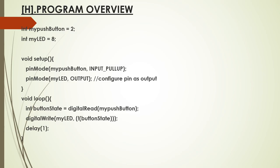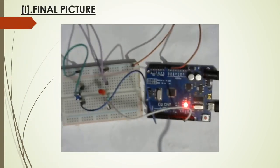If buttonState contains zero, the NOT operator reverses it to one — so one (high) is supplied to pin 8 and the LED turns on. If buttonState contains one (switch not pressed), the NOT makes it zero — zero voltage is supplied to pin 8 and the LED is off. Very simple logic. I will now show all this on the breadboard from the beginning.